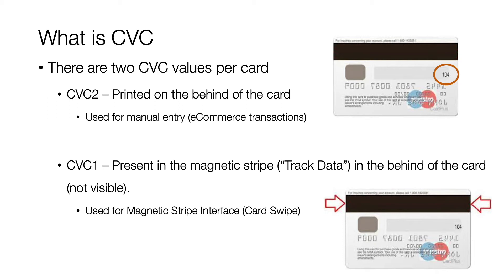CVC1 is present inside the magnetic stripe of the card and is not visible to us. The number is stored inside the magnetic stripe, and this data is also referred to as track data. CVC1 is used whenever a card is used in a POS machine using a magnetic stripe interface — what we call a swipe.